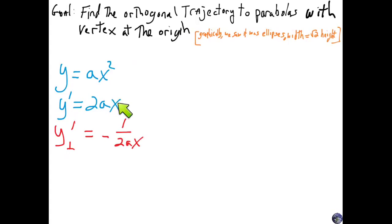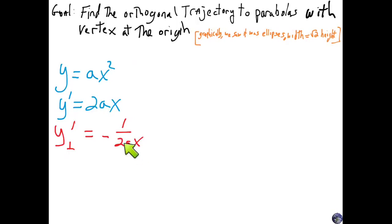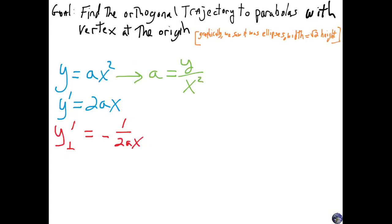Here's the subtle part many students miss: it's tempting to think of a as a constant, but really it's not — because we want this red family to work for every single value of a, not just one specific parabola. So we can't just leave it as a; we need to go back and figure out what a actually is in terms of x and y.